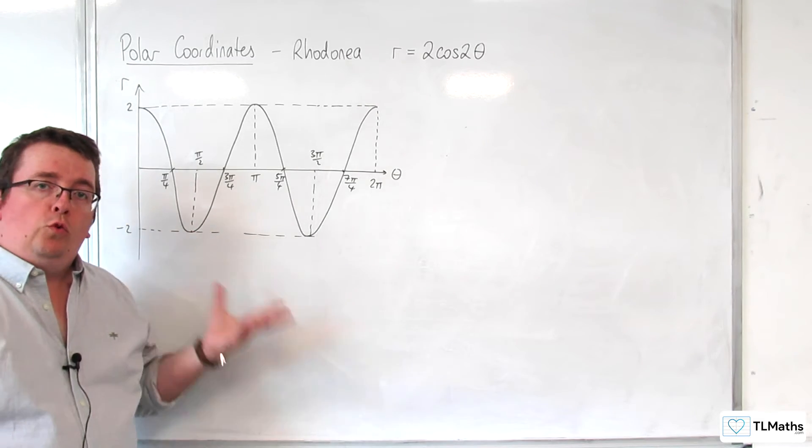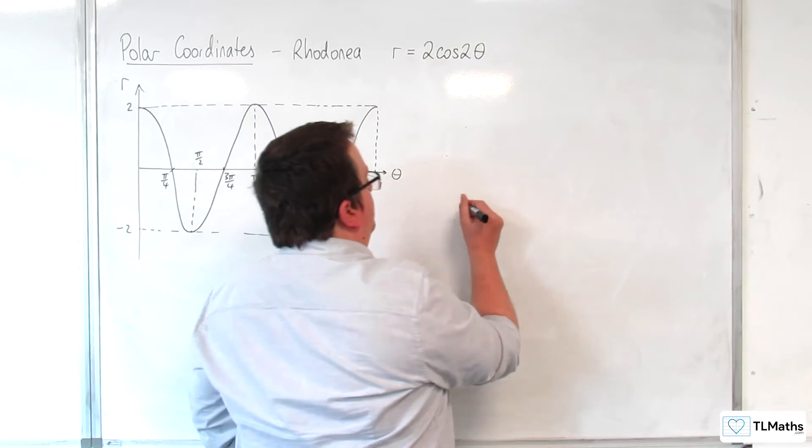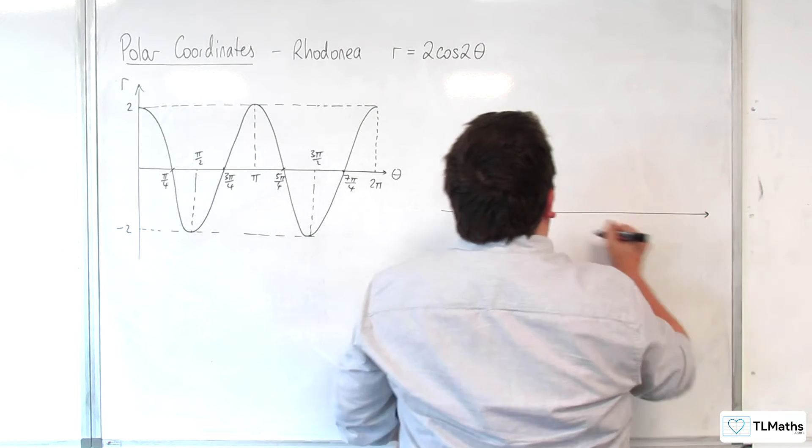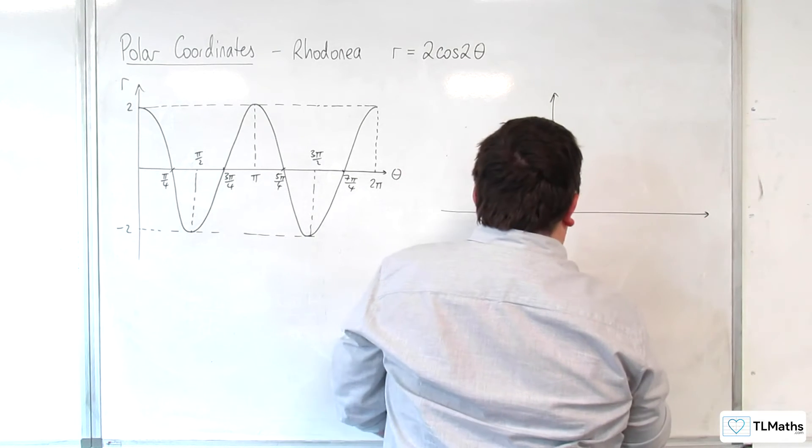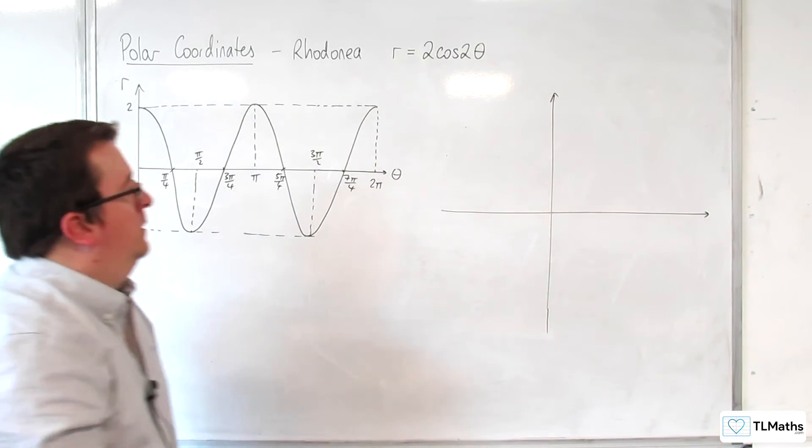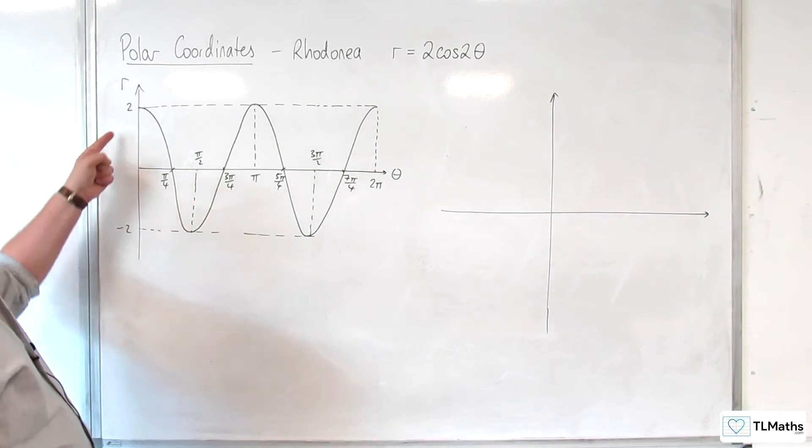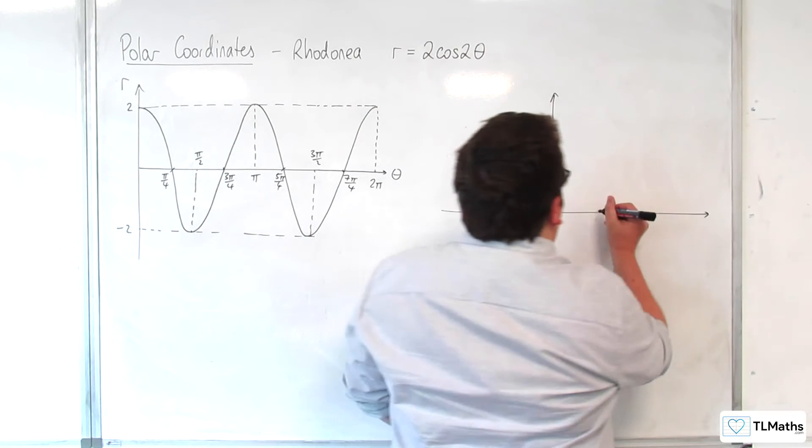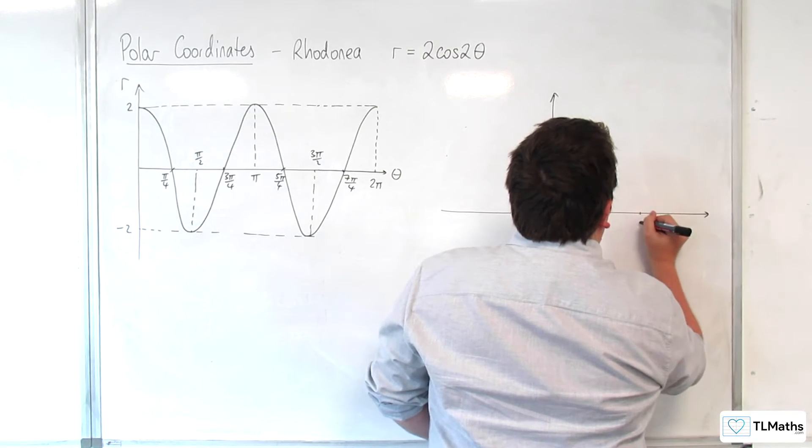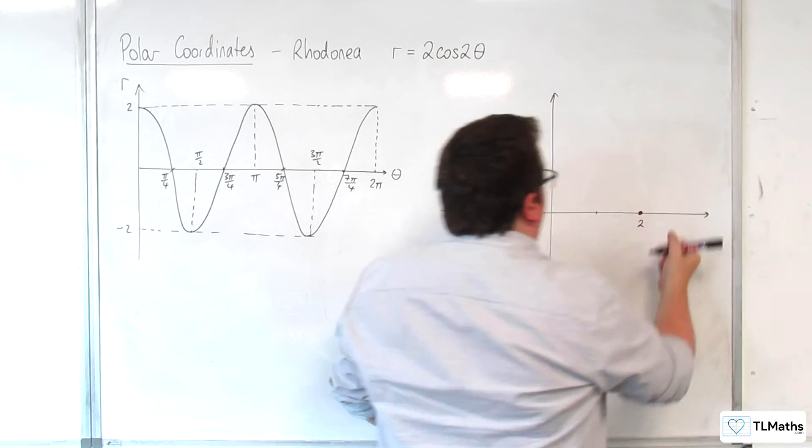Let's take a look at what this would look like as a polar curve. First things first. When theta is 0, r is equal to 2. So, 1, 2. Here is where our curve starts.